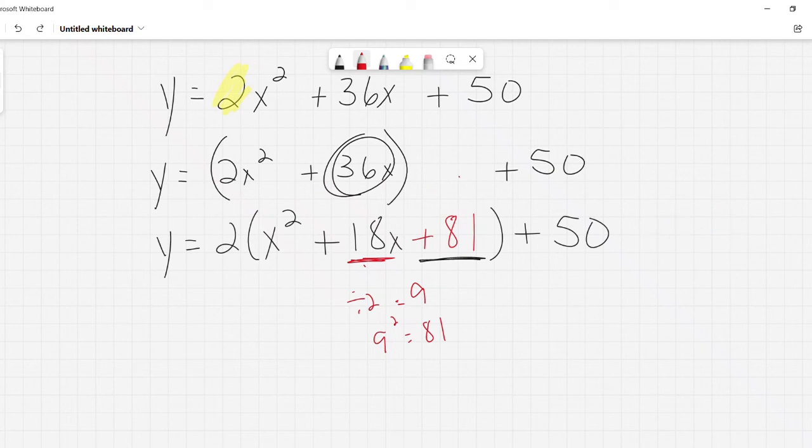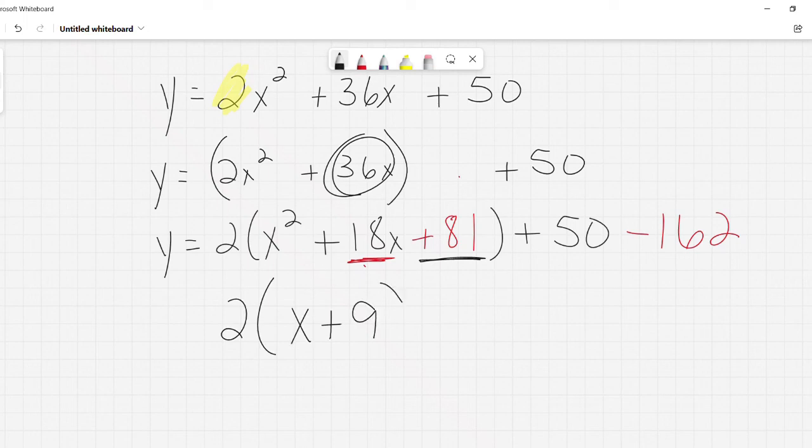Yeah, I know. Same as if there was a negative 1 out here. I wouldn't be adding 81. I'd be adding a negative 81. So you have to take that into consideration. Pulling out this 2, it's still influencing everything inside this parentheses. You have to be super careful with that and not forget about the 2. So I've added 162. So I need to subtract 162. And again, this was 9. We said we divided by 2. We got 9. So 9 is my B. So this is going to be 2 times x plus 9 squared minus 112. And that's 50 minus 162 is negative 112. And so our vertex for this one would be negative 9, negative 112.